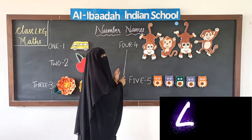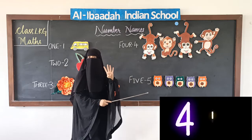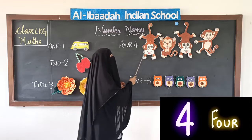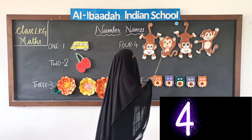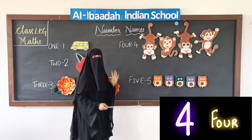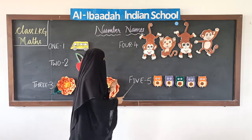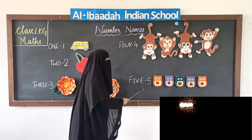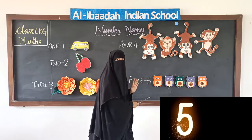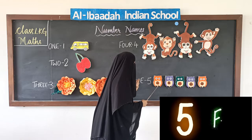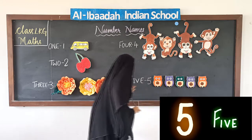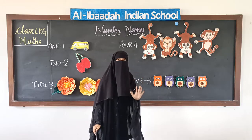Now F-O-U-R, 4. F-O-U-R, 4. See, we will count: 1, 2, 3, 4 — 4 monkeys. So F-O-U-R, 4. F-I-V-E, 5. F-I-V-E, 5. See 5 O's: 1, 2, 3, 4, 5. So F-I-V-E, 5.